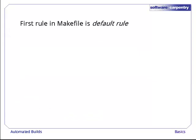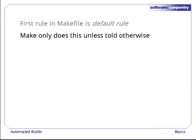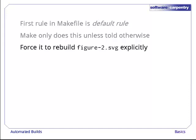The answer is that make uses the first rule in the makefile as its default rule. Unless it's told otherwise, it only executes this rule. If we want make to rebuild figure2.svg, we have to tell it so explicitly.